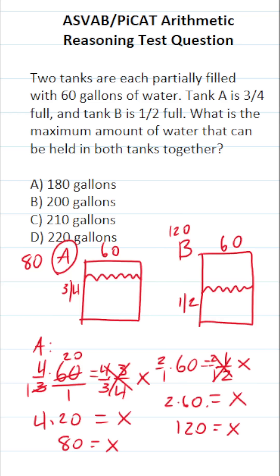How much water can they hold together? Well, tank B can hold 120 gallons, tank A can hold 80 gallons. Just add these together. You should be able to do that mentally. Both tanks together can hold 200 gallons of water.